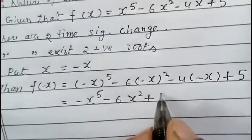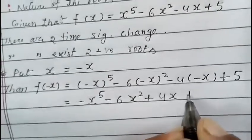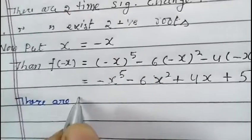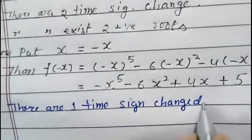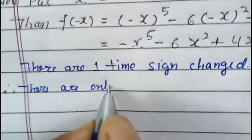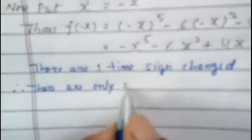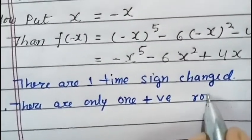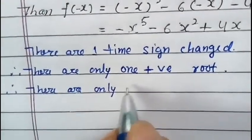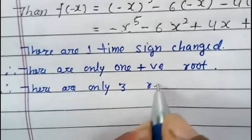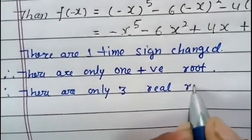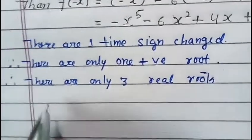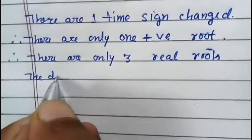In f(-x), negative into negative makes the 6x squared term positive, and there is only one sign change. Therefore there is only one negative real root. Combining, there are three real roots in total, since the degree n is 5.